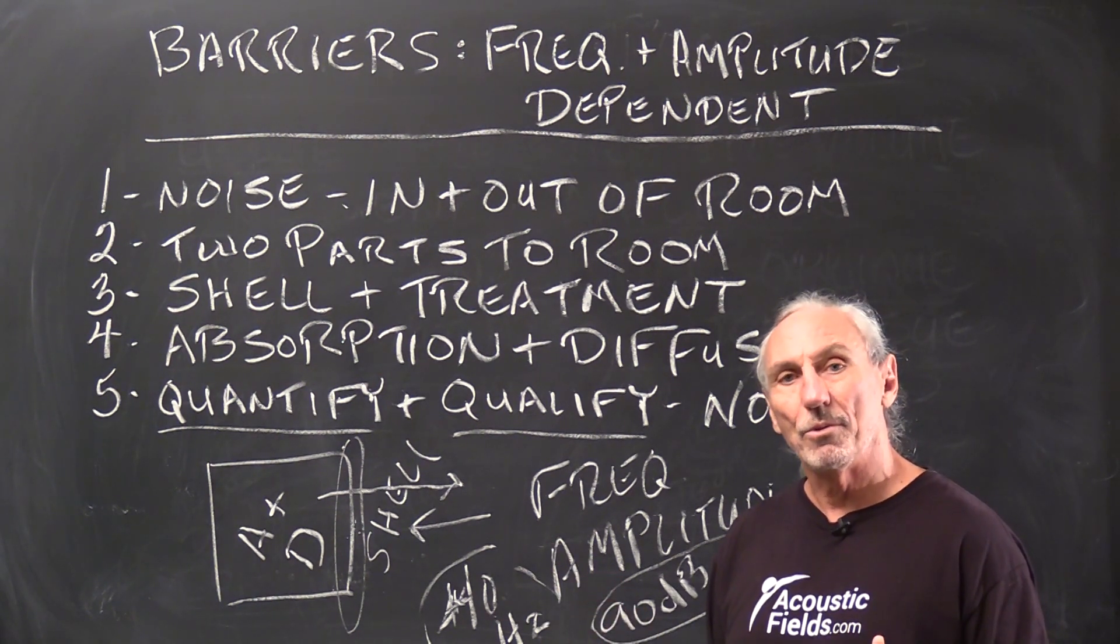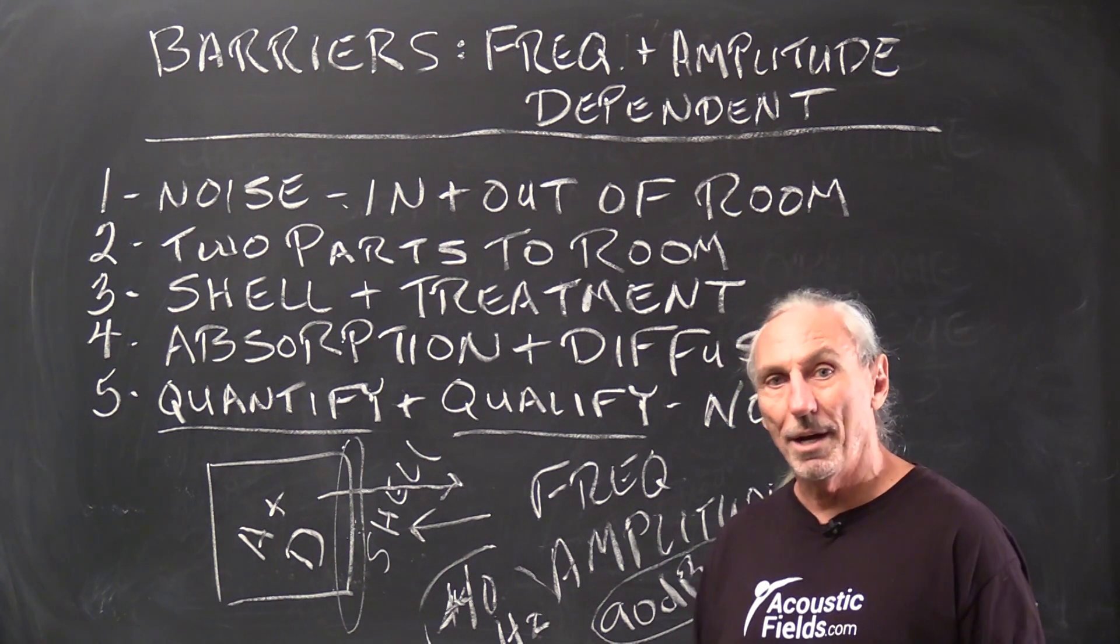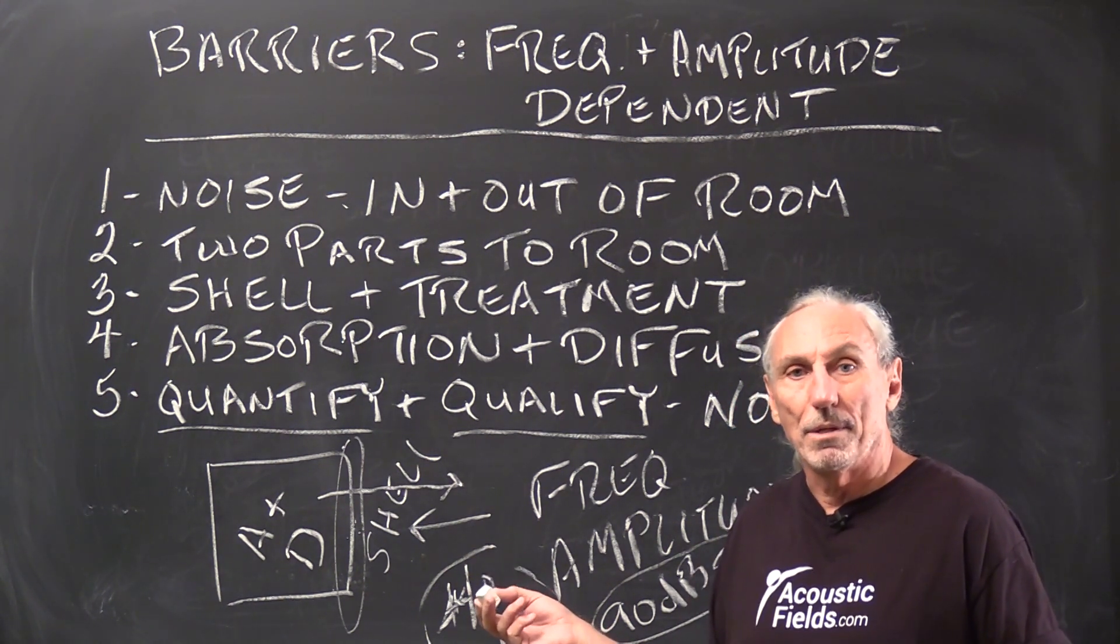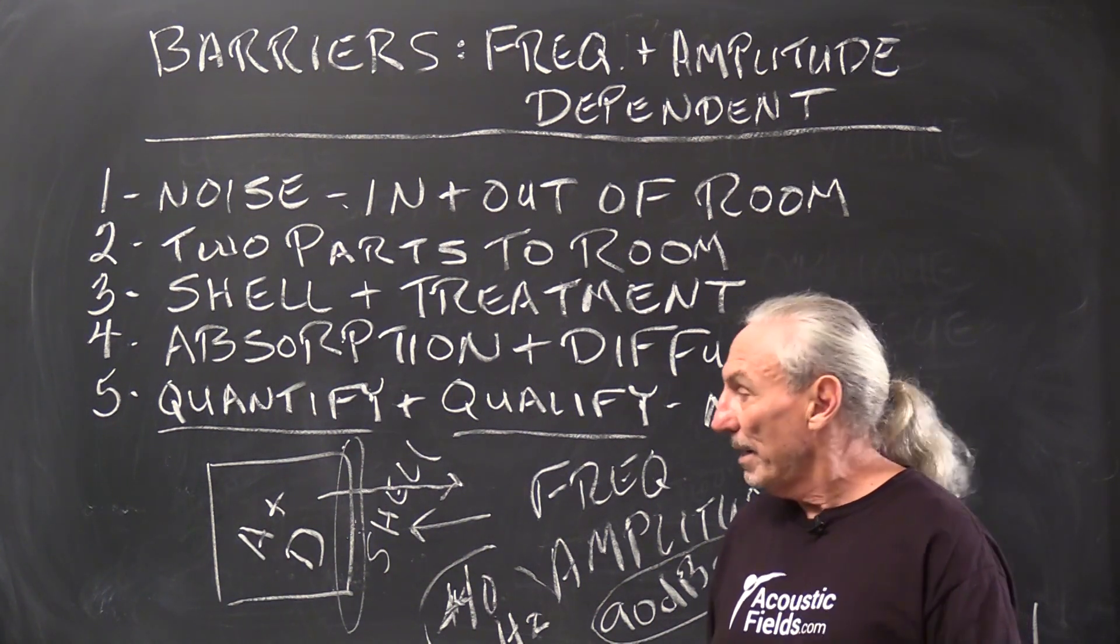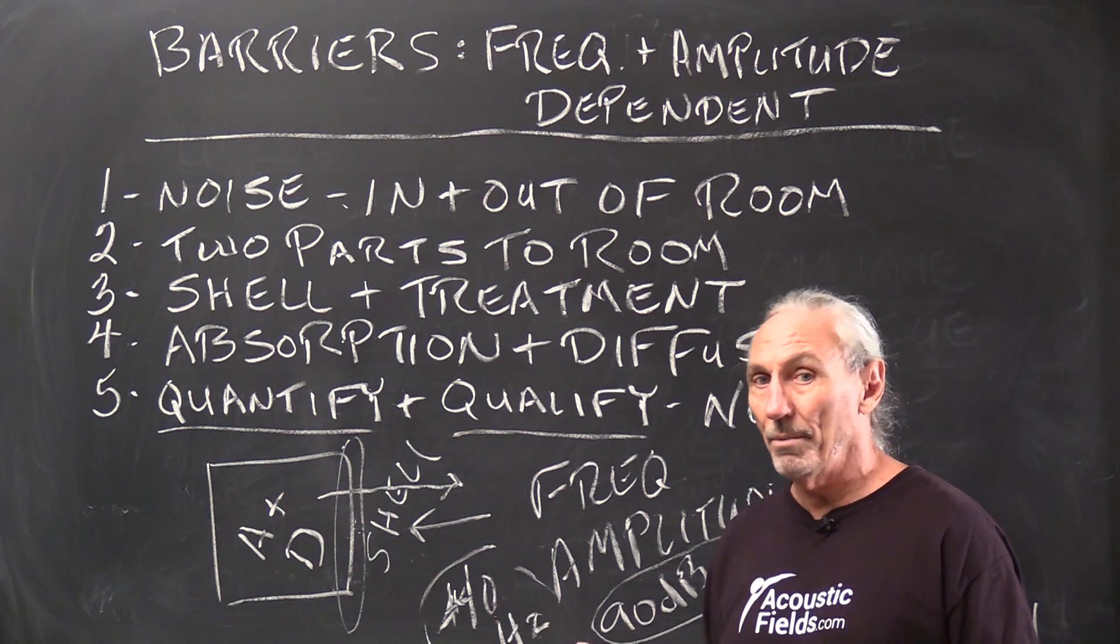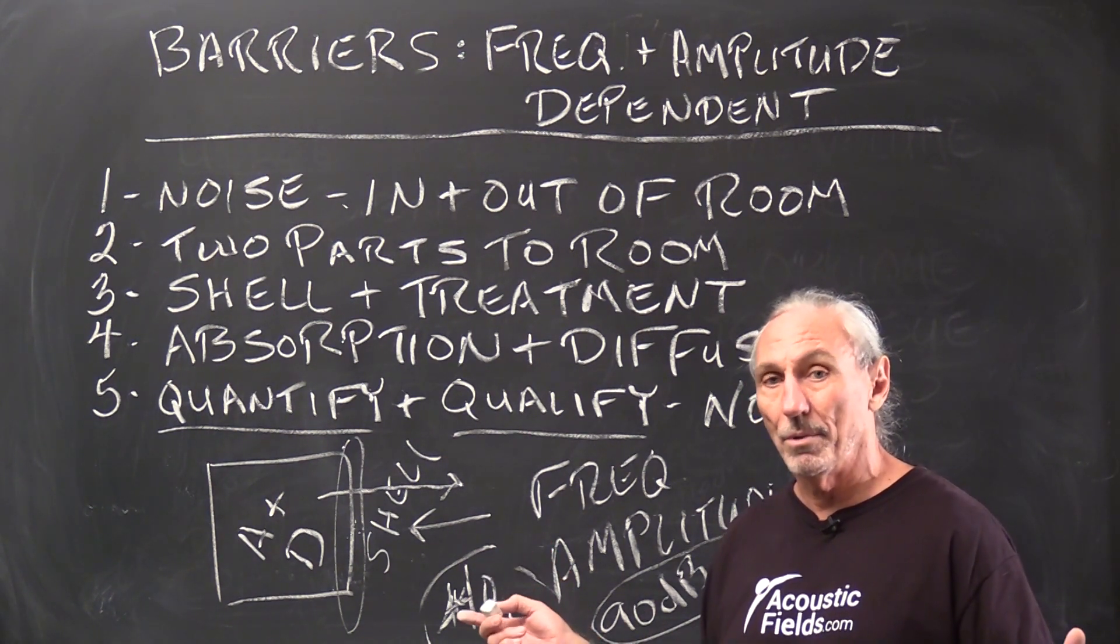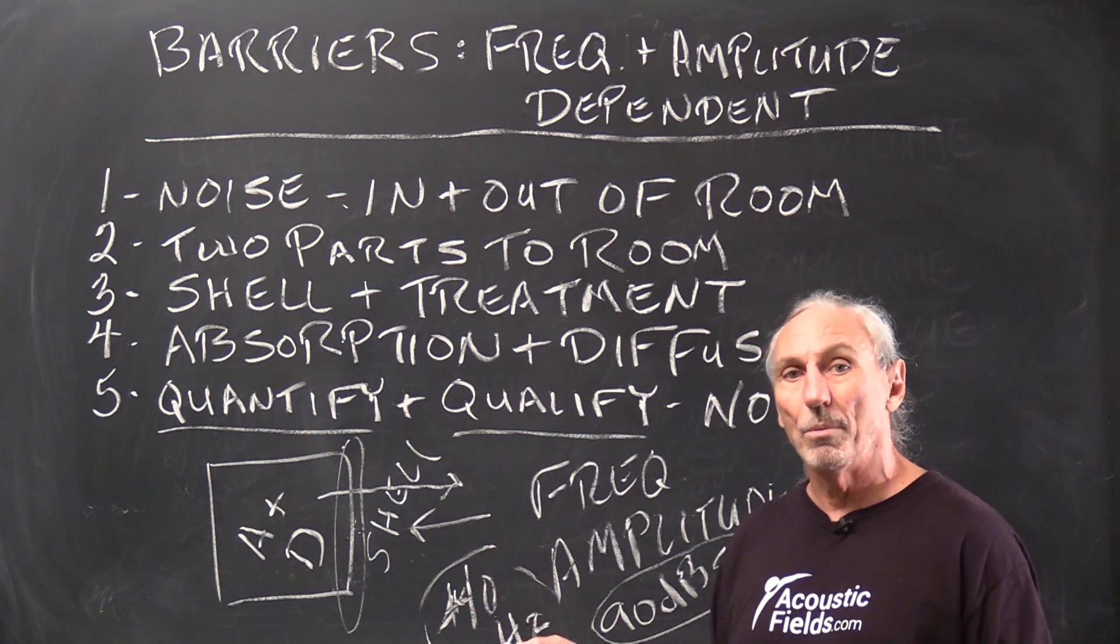It's like in carpentry. Measure twice, cut once. Because after you cut, the piece is ruined if it's not the right size. So measure twice to make sure you get it. So we measure first, then we build. And we guarantee our results. There's no problem. If it doesn't work we'll give you your money back. But we've done enough of these that we know it will work.